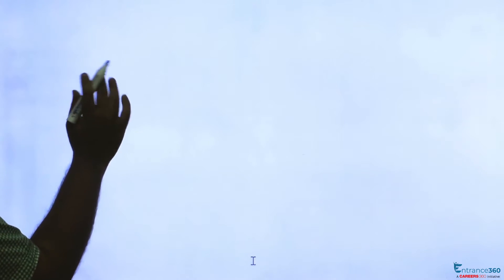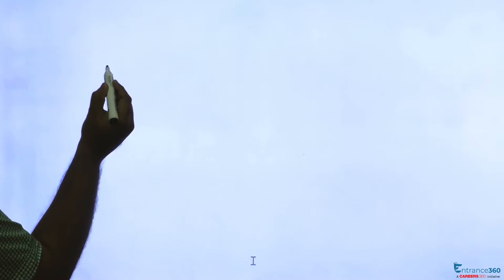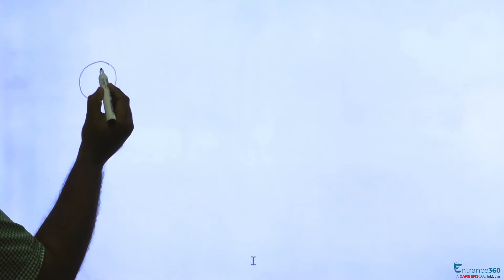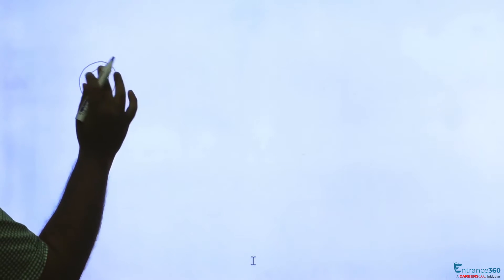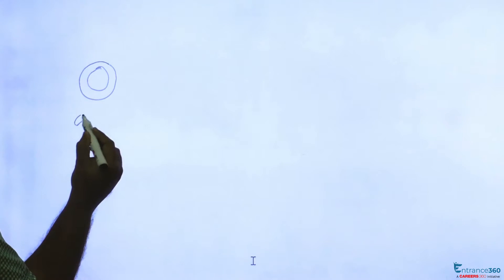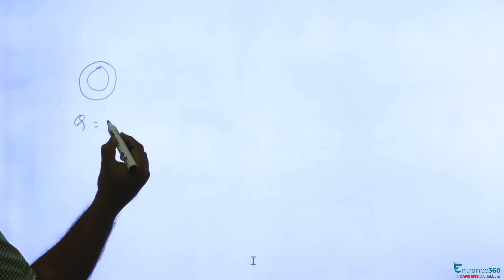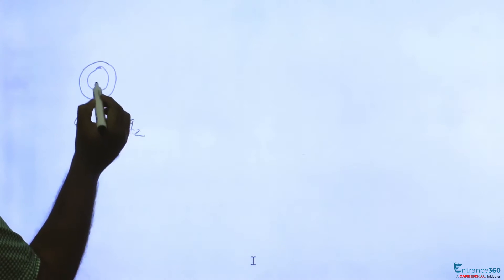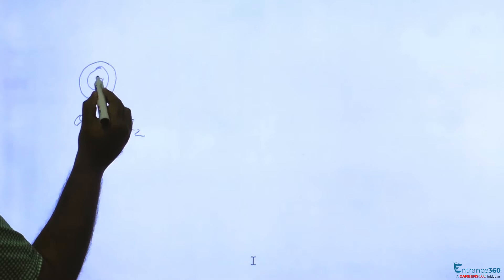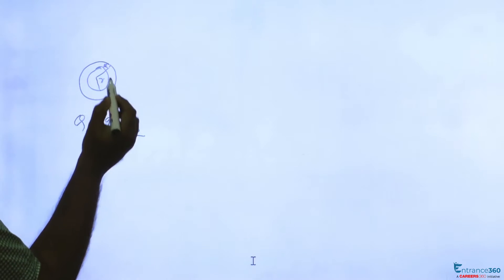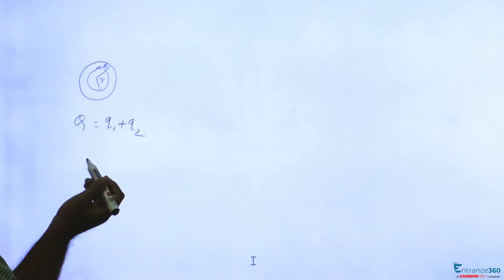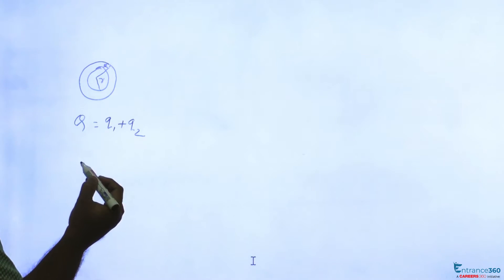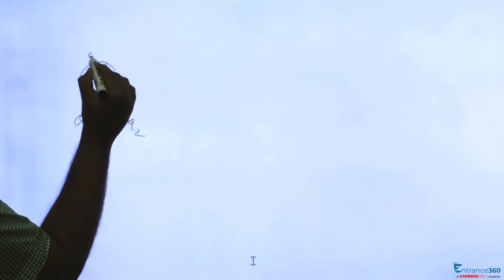In the question, it is given that we have two concentric spheres. Total charge is given as Q. Let's say the inner sphere has charge Q1 and the outer sphere has charge Q2. The inner sphere is of radius small r, and the outer sphere is of radius R. This is a hollow sphere as given in the question, and the charge densities are equal.